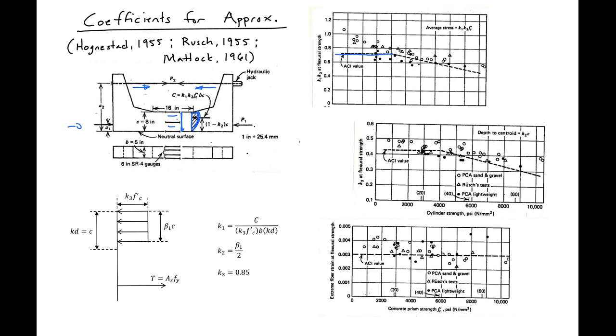So for higher strengths, we have lower K1 times K3 values. They also measured K2, which was the distance to our centroid, and found it also varies with strength, as shown here in this figure.